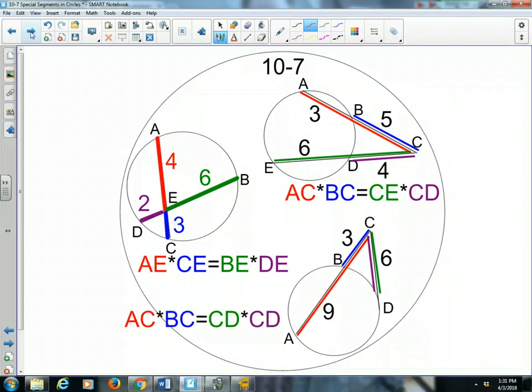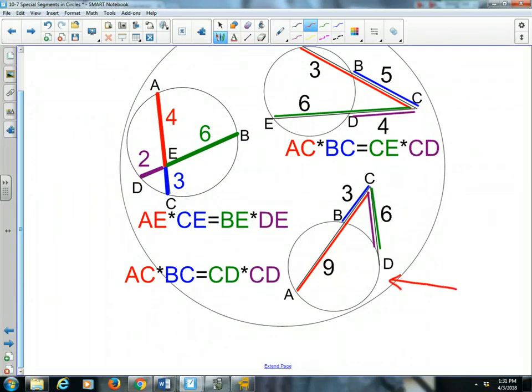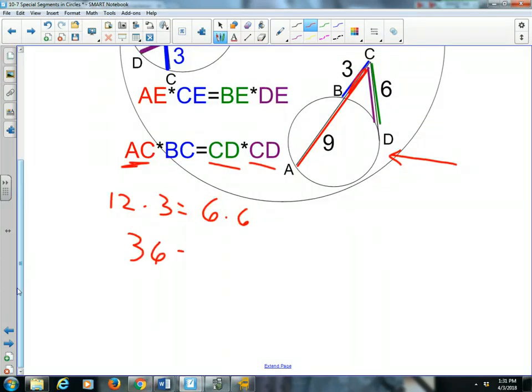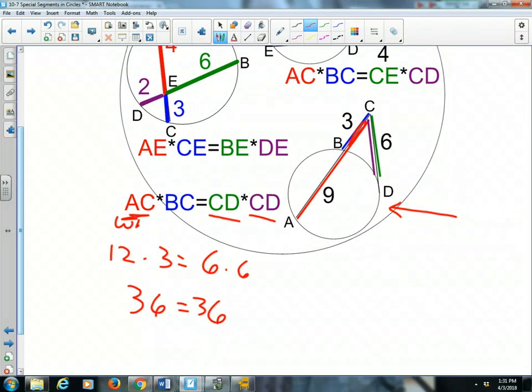And the last property is pretty similar to it. So now we're looking at this one right here. We have a secant and we have a tangent. The whole secant AC, that is 12 units long, times just the outside part of the secant, that is 3 units long. That equals, you can see here, it's the tangent line multiplied by itself. The tangent line is 6 multiplied by itself, which is another 6. So 12 times 3 is 36 and 6 times 6 is 36.